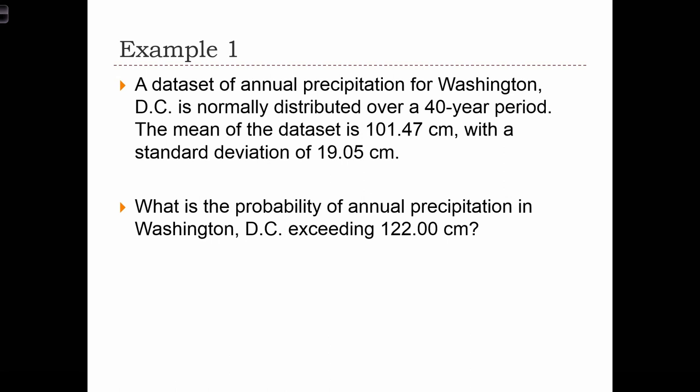So the first step is to draw our picture. Our picture says that rain is distributed normally. So each year, we can have a different amount of rain. Here's the rain amount, and here's the probability of different amounts of rain. The most likely amount of rain that we are going to receive in any year is the mean, 101.47.